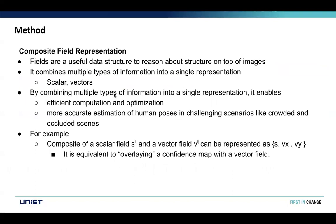First, let's talk about composite field representation. These fields are very useful data structures for reasoning about structure on top of the image. They combine multiple types of information into a single representation — for example, scalars and vectors. By combining multiple types of information, it enables efficient computation, optimization, and more accurate estimation of human pose in challenging scenarios like crowded and occluded scenes.